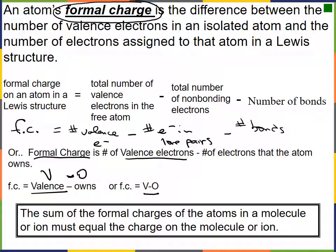This second approach — valence minus owned — is what organic chemists prefer. Let's apply it to sulfur dioxide. We draw our structure with dots so we can split the bond electrons in half. Each oxygen is in group six; with three lone pairs and one half-share of the bond, it owns seven electrons, giving it a formal charge of 6 − 7 = −1.